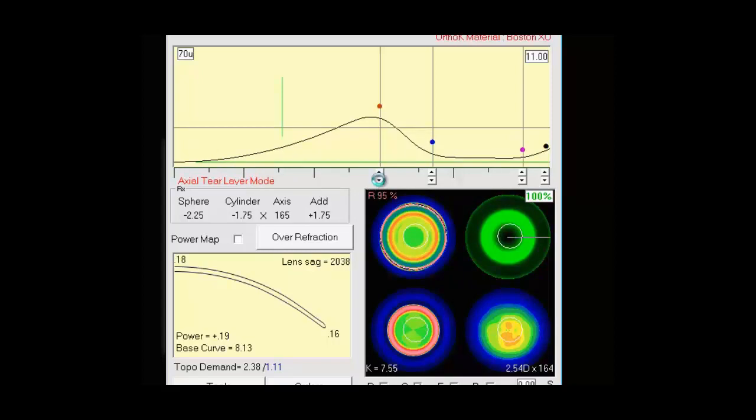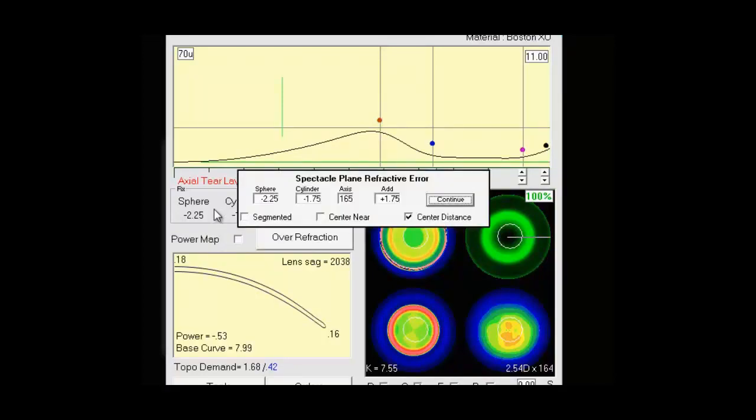We have arrows we can click to control our control points. Or we can drag and drop them. Moving down we have the Spectacle Refraction box. To edit or enter Spectacle Refraction left click on it and this box comes up. We can enter or change it.